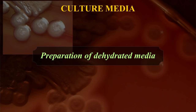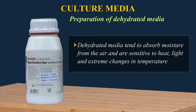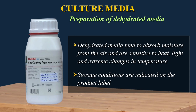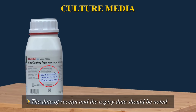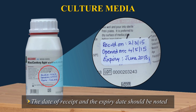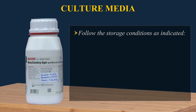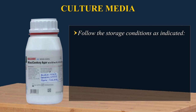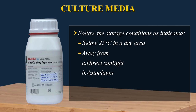Preparation of dehydrated media. Dehydrated media tend to absorb moisture from the air and are sensitive to heat, light, and extreme changes in temperature. Storage conditions are usually indicated on the product label and should be followed carefully. Follow the storage conditions as indicated on the label — usually below 25 degrees centigrade in a dry area away from direct sunlight, autoclaves, hot air ovens, or other heat sources.